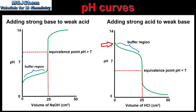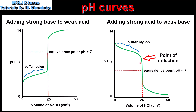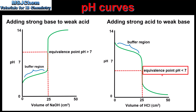Moving on to the pH curve on the right, which is for adding a strong acid to a weak base. We start at a pH of approximately 10, which is the pH of a weak base. As the acid is added the pH decreases and we see the buffer region, where the solution contains appreciable amounts of the weak base and its conjugate acid. The solution resists the change in pH until we reach the point of inflection, then we see a large decrease to pH 1. The equivalence point occurs at a pH less than 7 because the salt produced from a strong acid and a weak base is an acidic salt.